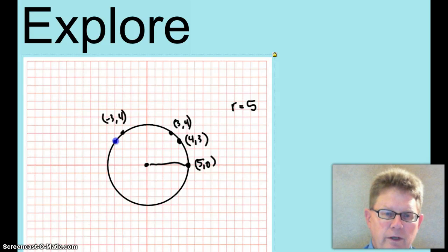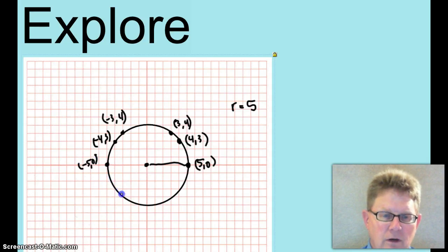And the coordinates of this point, negative 4, 3. And of course, that point, negative 5, 0. And I can find the other points here. I'm going to say them, I'm not going to write them. Negative 4, negative 3. Negative 3, negative 4. 3, negative 4. And 4, negative 3.